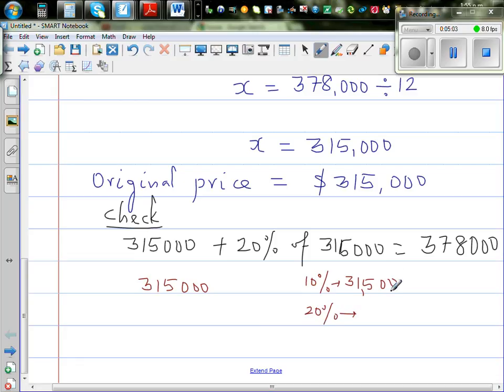So this is $63,000. 20% is $63,000. So let us add $63,000 to this, which is $378,000. So your answer is correct.